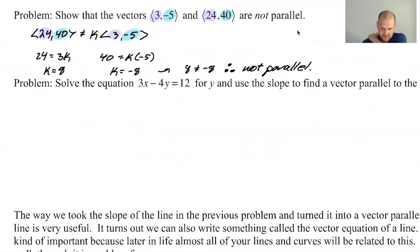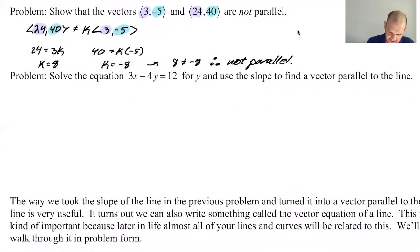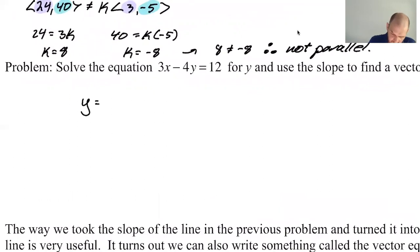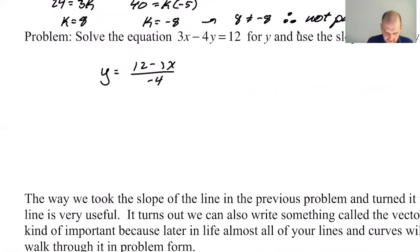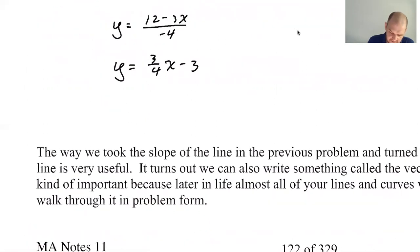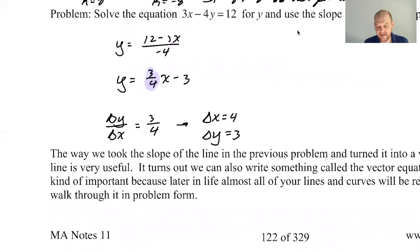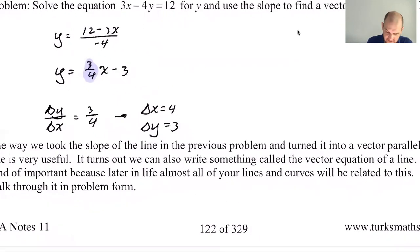Solve the equation for y and use the slope to find a vector parallel to the line. This is what we talked about. So y equals 12 minus 3x over negative 4, which gives me 3 fourths x minus 3. When I look at this, I think that delta y over delta x is 3 fourths, which means that I could say that delta x is 4 and delta y is 3. You could actually say delta x is 8 and delta y would have to be 6, or delta x is 1 and delta y would be 3 fourths. There's an infinite number of choices. My vector parallel to the line is going to be delta x, delta y, so <4,3>.